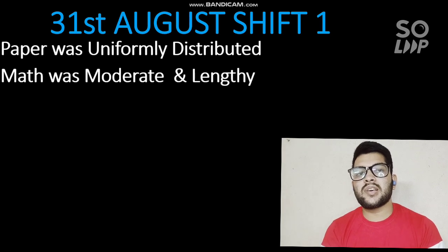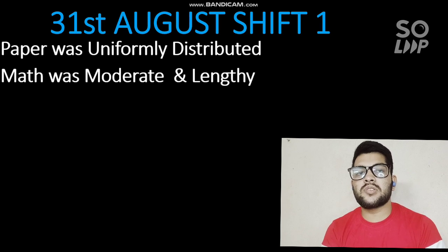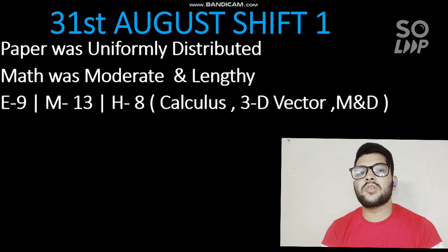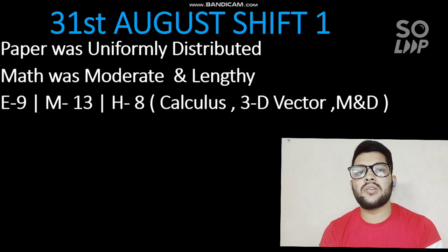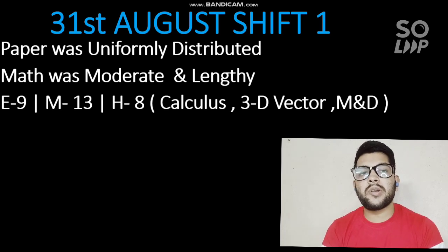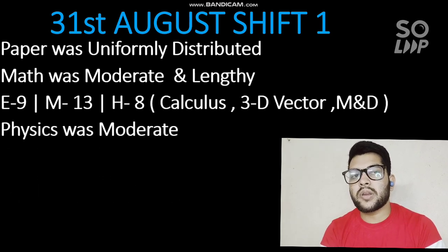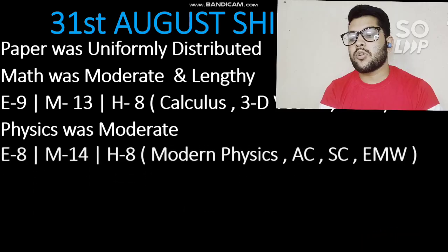In Shift 1, Math was moderate and lengthy as expected — some questions were time-consuming. The number of easy questions was 9, moderate was 13, and hard was 8. Topics with multiple questions included calculus, 3D vectors, and matrices and determinants. If your exam is next, revise these topics in detail.